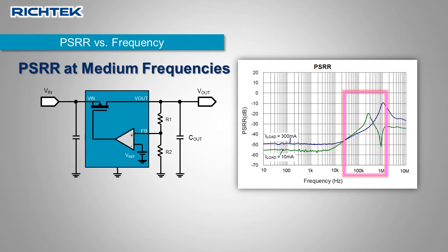In this example, the LDO unity gain frequency is 300 kHz at light load and 1 MHz at high load, as can be seen from the peaks in the graph.